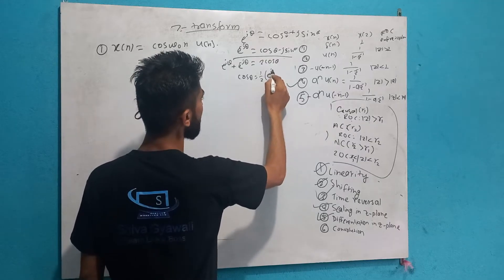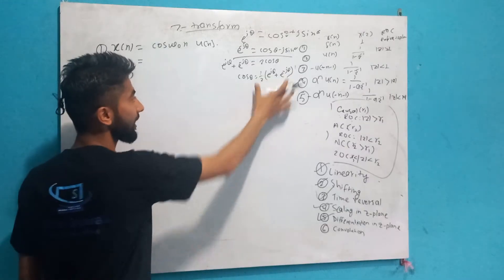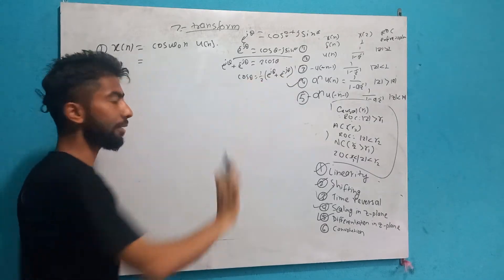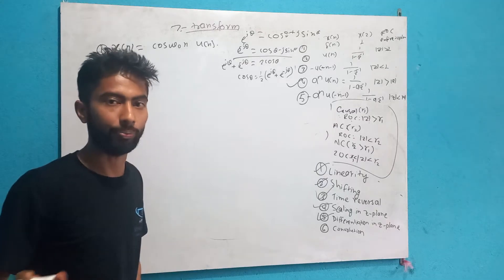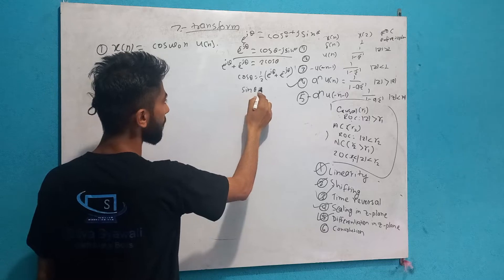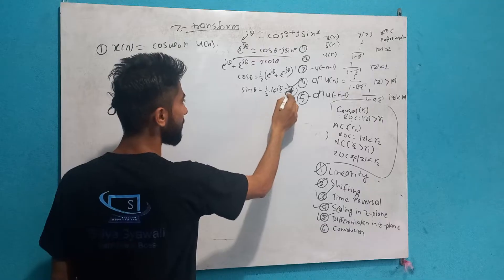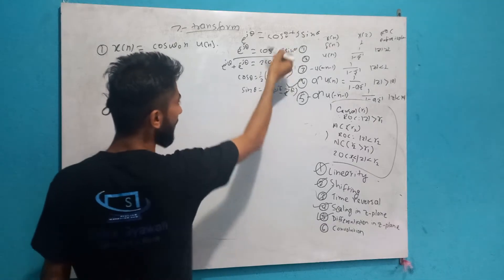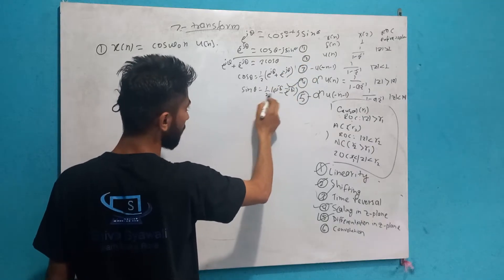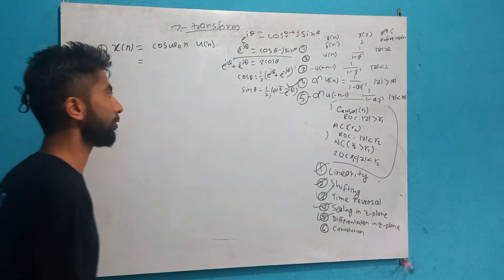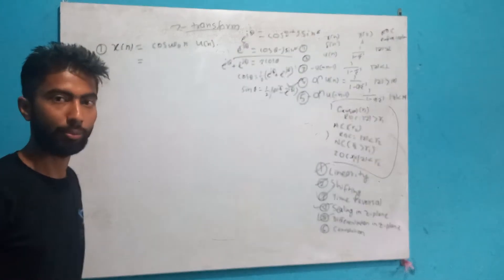1 by 2, e to the power jθ plus e to the power minus jθ. Now we have to do this. e to the power jθ plus e to the power minus jθ equals 2 cos θ. So cos θ equals 1/2 times (e^jθ + e^-jθ). And sin θ equals 1 by 2j times (e^jθ minus e^-jθ). So this is 1 by 2j. Perfect.